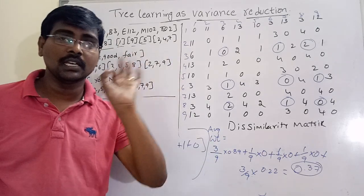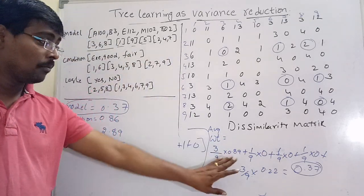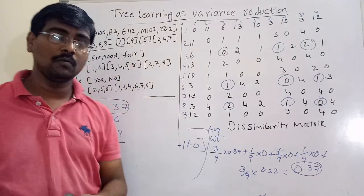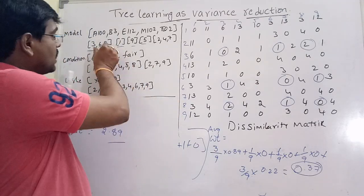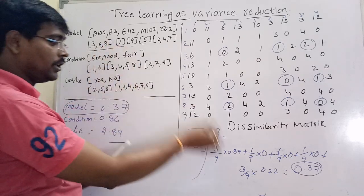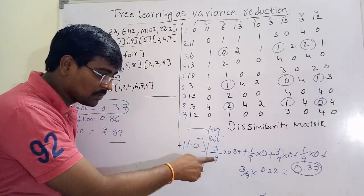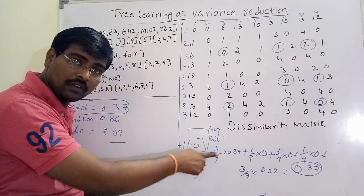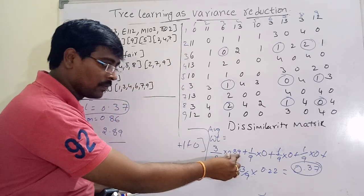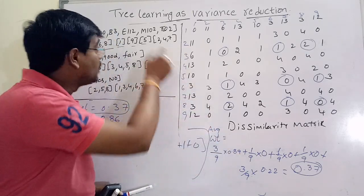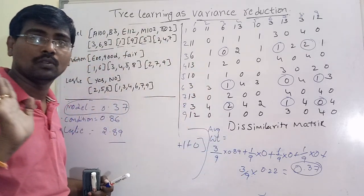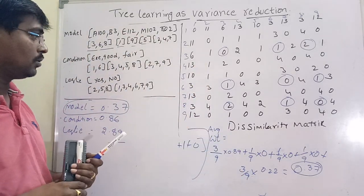The entire procedure is the same — it simply changes only the formula. But the final formula structure is always the same: (number of elements in the set / total number of elements) × metric. If you are using regression, the metric is variance. If you are using clustering, the metric is the dissimilarity value.